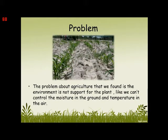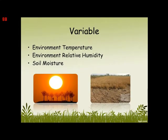The problem about Agriculture that we found is the environment is not supported for the plant. Like we can control the moisture in the ground and the temperature in the air. There are three variables that we consider for this project: first, environment temperature; second, environment relative humidity; third, soil moisture. But in fact, there are more than three variables that affect the moisture in the ground.